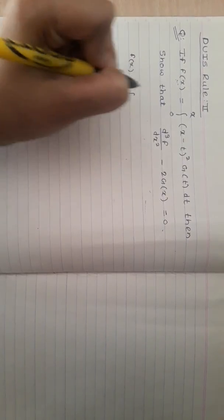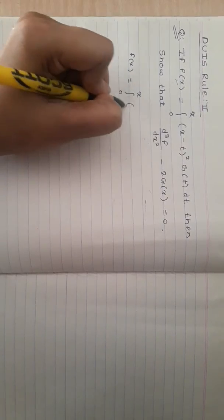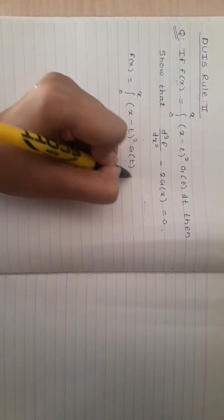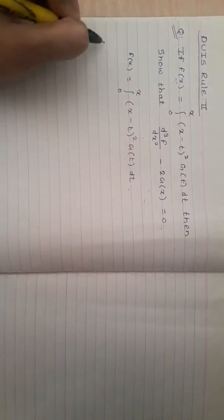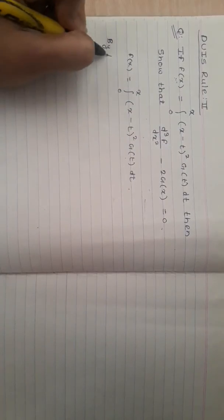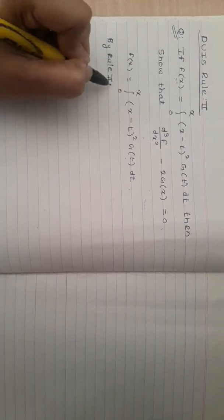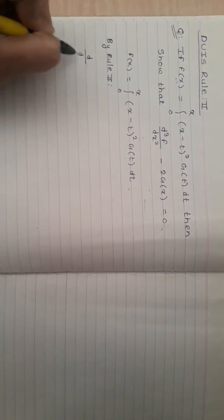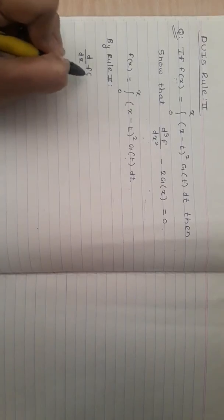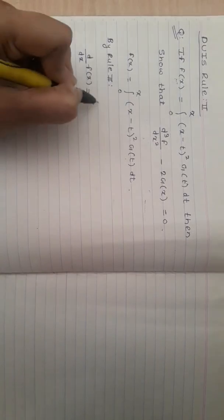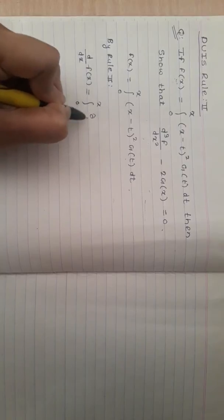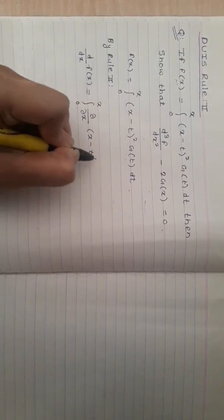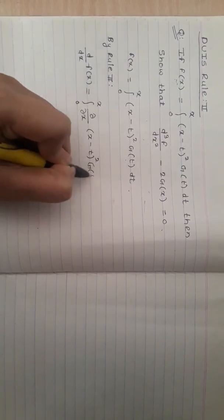We start with f(x), which equals the integral from 0 to x of (x minus t) squared times g(t) dt. By Rule 2, differentiating with respect to x gives the integral from 0 to x of the partial derivative with respect to x of (x minus t) squared times g(t) dt.